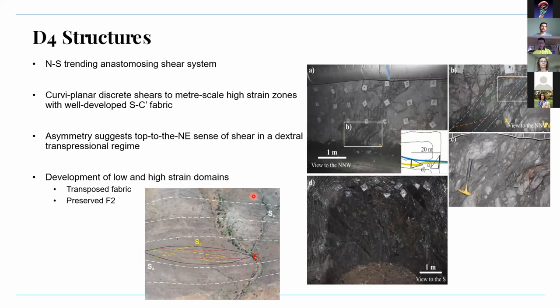D4 marks the development of a north-south trending anastomosing shear system during dextral transpression. The discrete shears are curviplanar and you find pods of up to meter-scale SC-prime fabric. The asymmetry of the SC-prime sigmoidal lenses suggests a top-to-the-northeast sense of shear in a dextral transpressional regime. The shear system has developed high and low strain domains resulting in transposed fabric and preserved pairs of F2 folds, as shown in this drone image to the north of the mine.